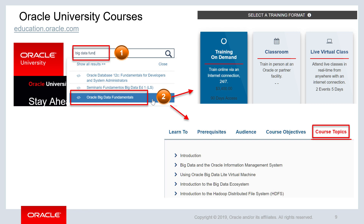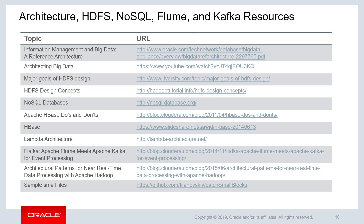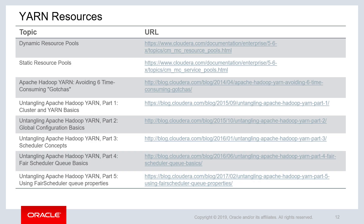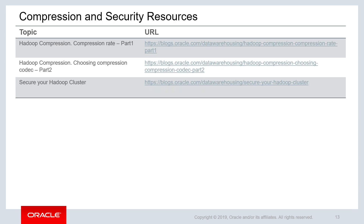The next few pages list some useful resources on architecture, HDFS, NoSQL, Flume and Kafka, Kerberos, Encryption and Sentry, YARN, and finally compression and security.